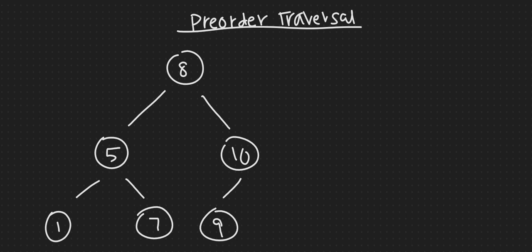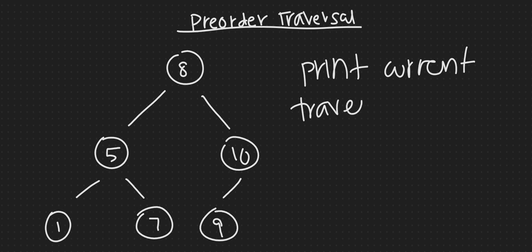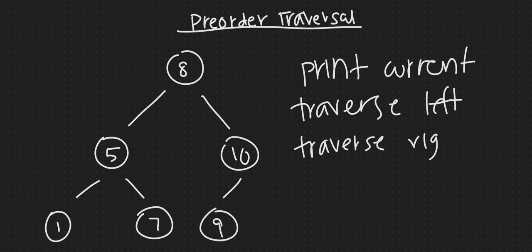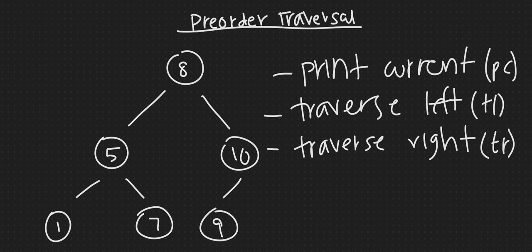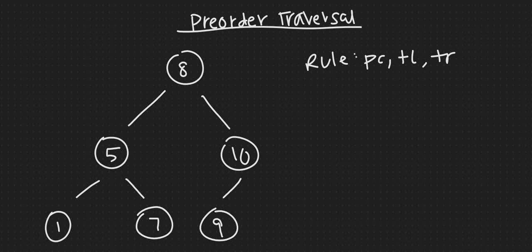How about pre-order traversal? I already talked about pre-order traversal in a previous video, but because it's super important for this one I'm going to go over it again — and if you want more depth go ahead and check that video out as well. In a pre-order traversal what you do is you print the current node, then you traverse left, and you traverse right. I'll abbreviate this as PC, TL, and TR. This is a really nice way of remembering it compared to post-order and in-order traversals — all you need to do is rearrange the order you do these.